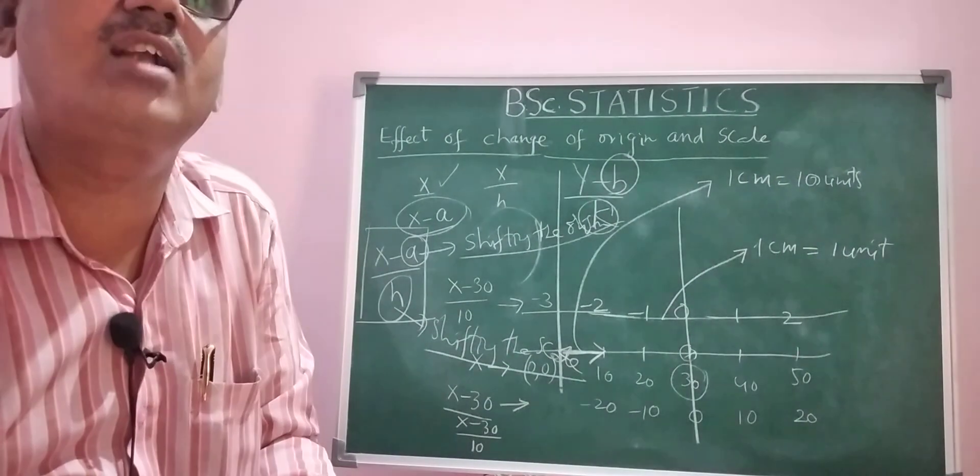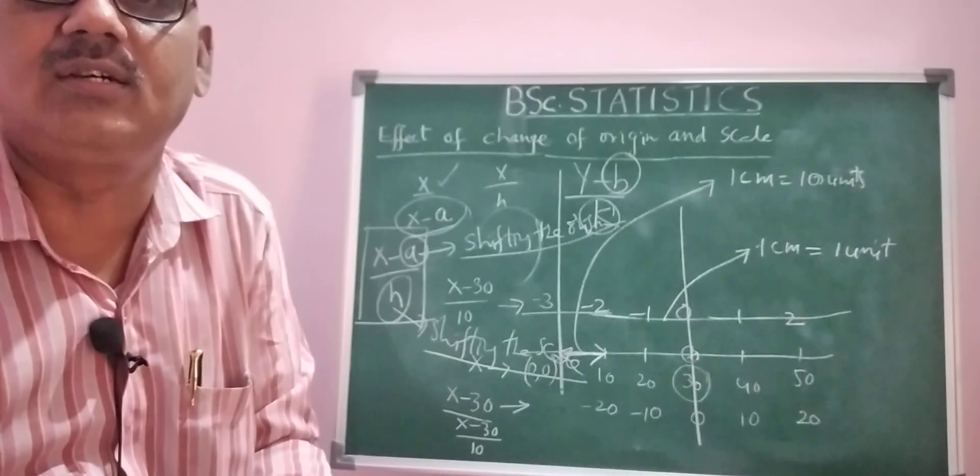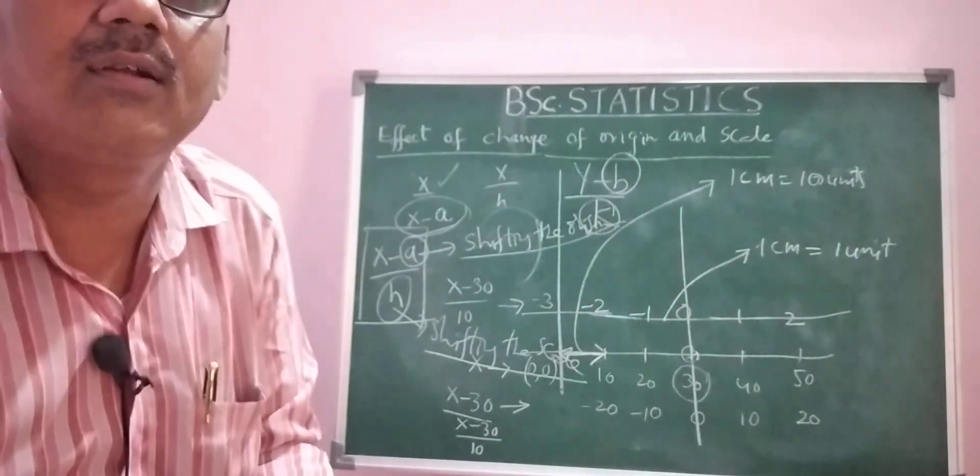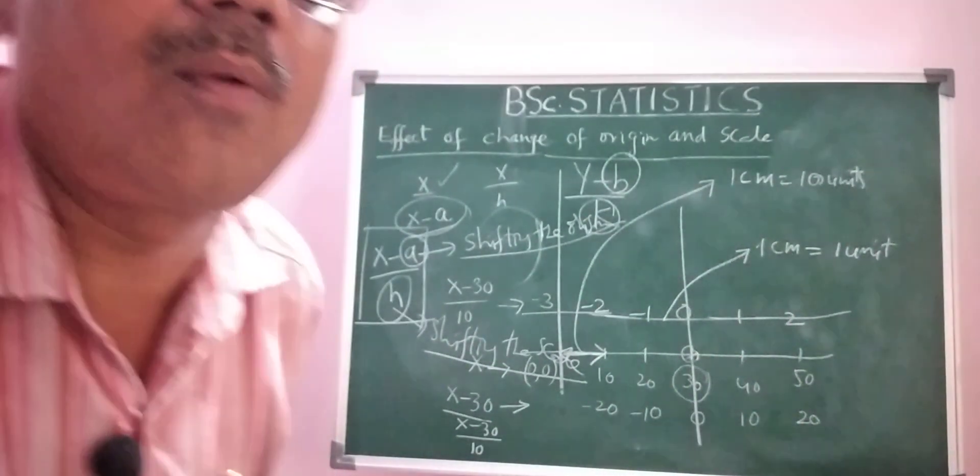This is the concept behind shifting the origin and scale. We can then study the effect of changing the origin and scale on any particular measure — whether moments, correlation, regression, etc. Hope you understand. Thank you.